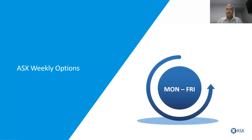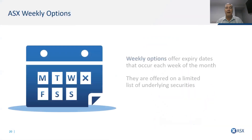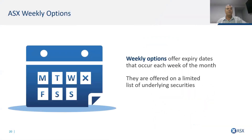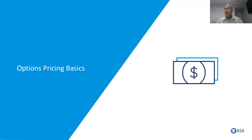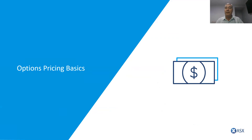There are also weekly options — not over every stock, but the most liquid stocks have options expiring every single week. If you think a stock will move quickly within a week, you can trade these shorter-dated options. We'll now move on to options pricing.